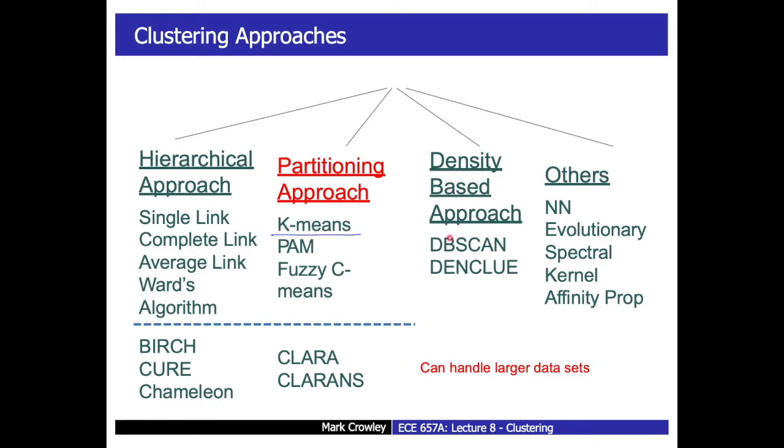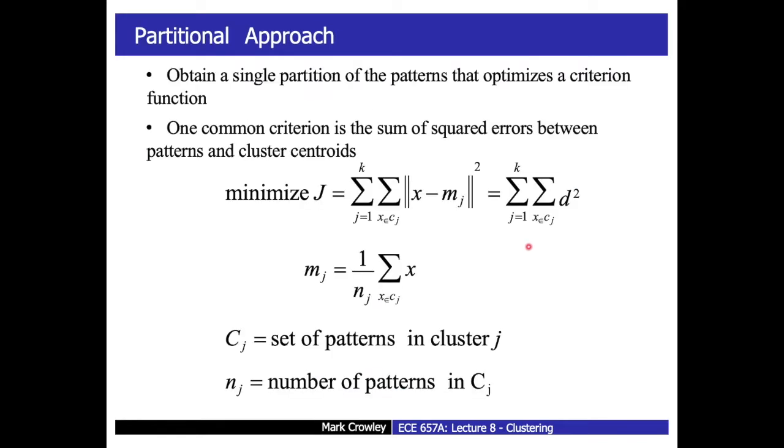The next method we're going to talk about is k-means, which is really probably the most famous clustering approach, or traditional approach. It does not have that property, so it means you have to specify the k up front, which makes it a bit harder.